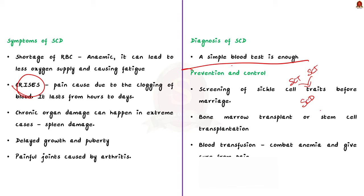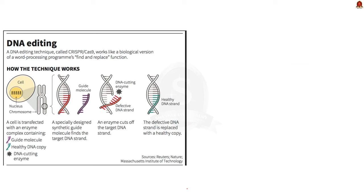On the treatment aspect, sickle cell disease can currently be cured only by bone marrow transplant or stem cell transplantation, while blood transfusion can combat anemia and provide relief from pain. The news article talks about Victoria Gray, the first patient to undergo gene editing therapy called CRISPR-Cas9 to treat sickle cell anemia, who has shared her positive experience after suffering from the disease for 35 years.